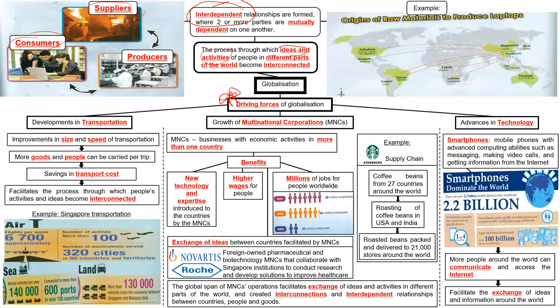There are three big reasons. First, transportation is more advanced. Second, MNCs are growing and becoming more prevalent. Third, technology is getting better. All three factors help explain how globalization is much more common today and how they are driving it. Transportation is quite straightforward — in today's day and age, transport is faster and bigger, so more goods and people can travel. For example, the A380 is a very big plane that can carry hundreds of people at one time, saving transport costs.